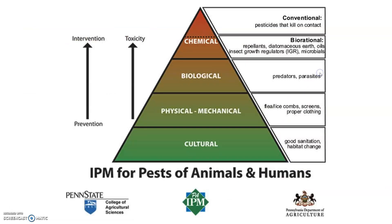As you progress through these different stages of pest management, it goes from more of a prevention approach to more of an intervention way of dealing with pests. They gradually can become more toxic and more risky. Cultural methods might be things like making the environment uninhabitable for that pest.